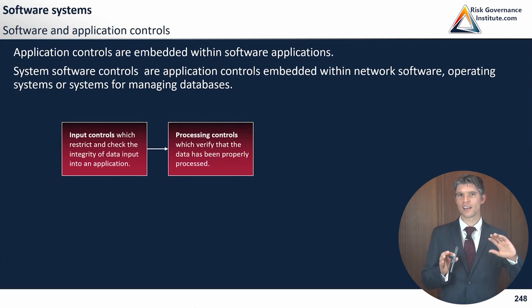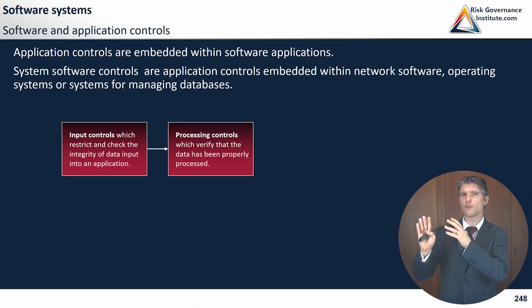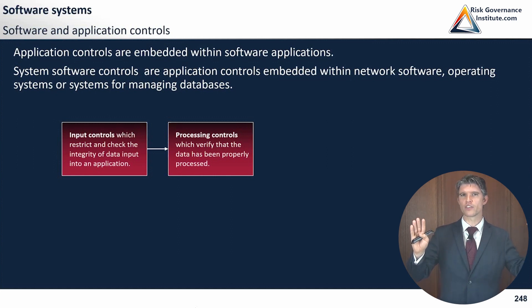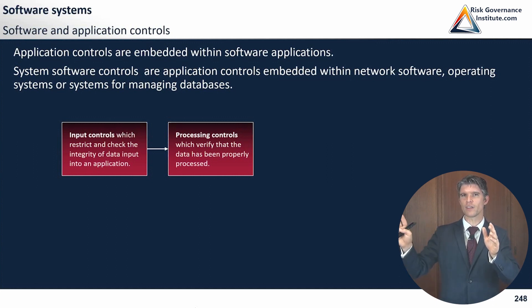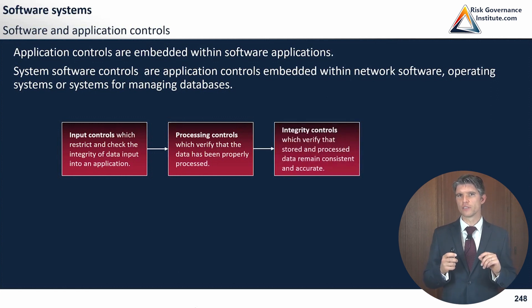Processing controls verify that data has been properly processed — that your information coming in is transferred and modified in a certain way, but when it comes out, the output is consistent, logical, and what you were expecting. For example, if you take a value and add one to it, you get a plus one at the end, and you'd verify that's consistent from your inputs to your outputs.